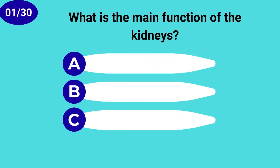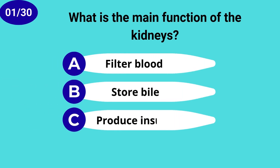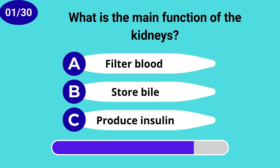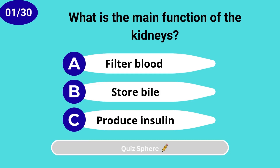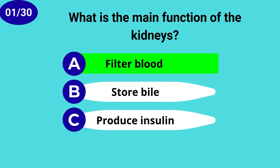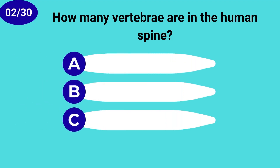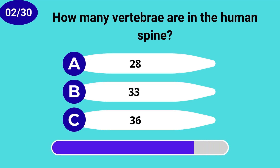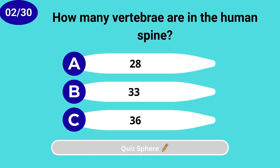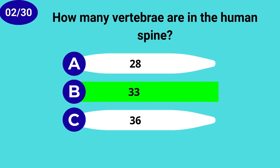What is the main function of the kidneys? Filter blood. How many vertebrae are in the human spine? 33.